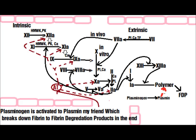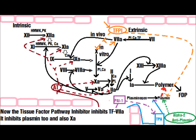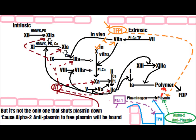Plasminogen is activated to plasmin, which breaks down fibrin into fibrin degradation products. TPA will activate plasminogen to plasmin, but PAI-1 can shut down TPA. The tissue factor pathway inhibitor (TFPI) inhibits TF/7A, and also inhibits Factor 10A. Alpha-2 antiplasmin will also be bound to shut plasmin down.